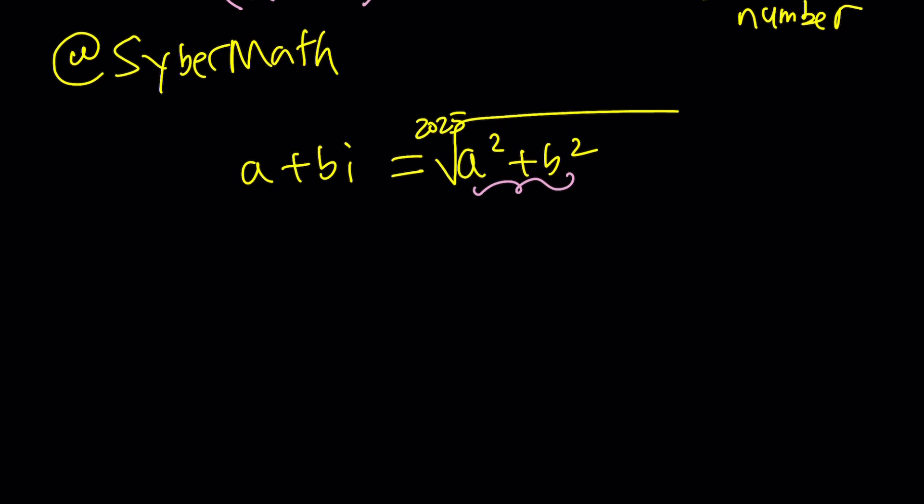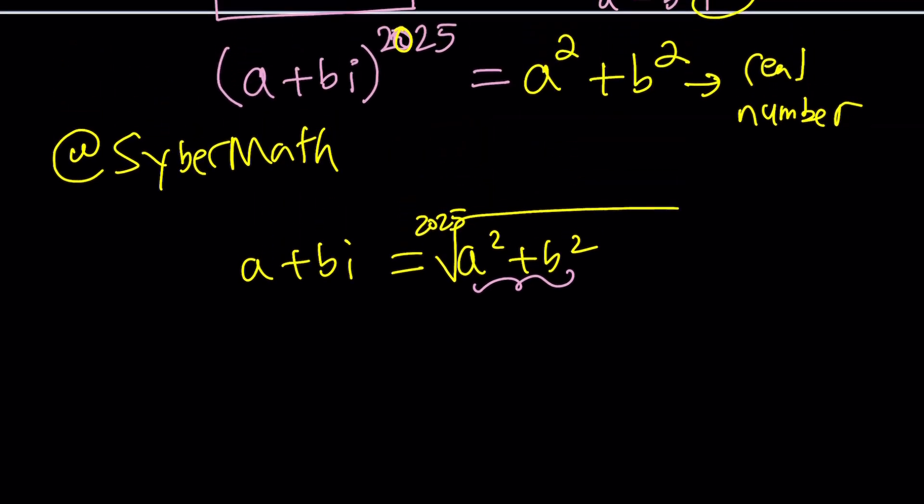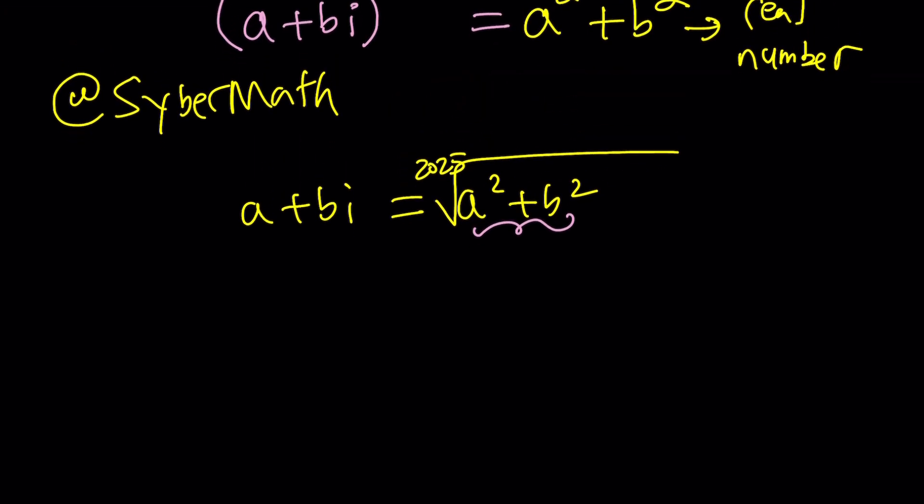Well, not necessarily because the 2025th roots of a number, there are 2025 of them. And in this case, only one of them will be real. Only one of them can be real. So all the others are non-real. But anyways, you get the idea. We found the real number, which is nice. Now, can we make this better? Yes. And the method is called the second method.